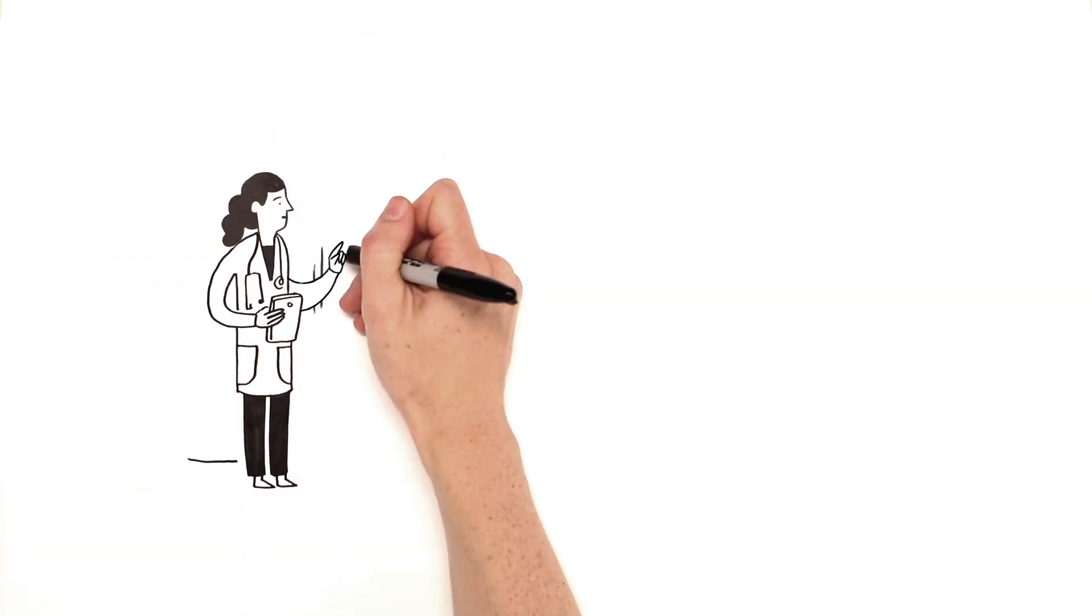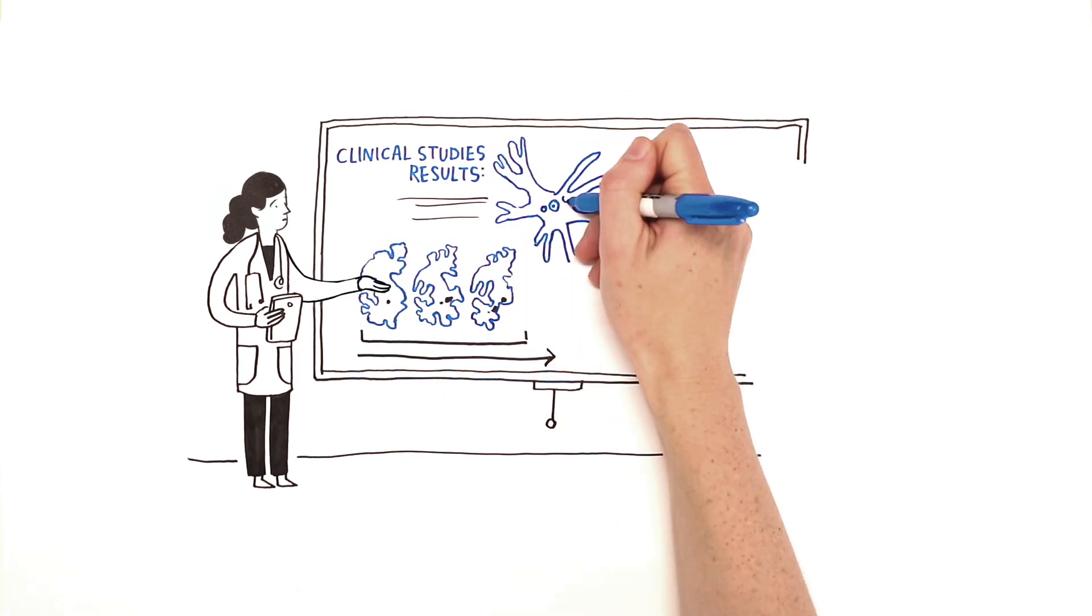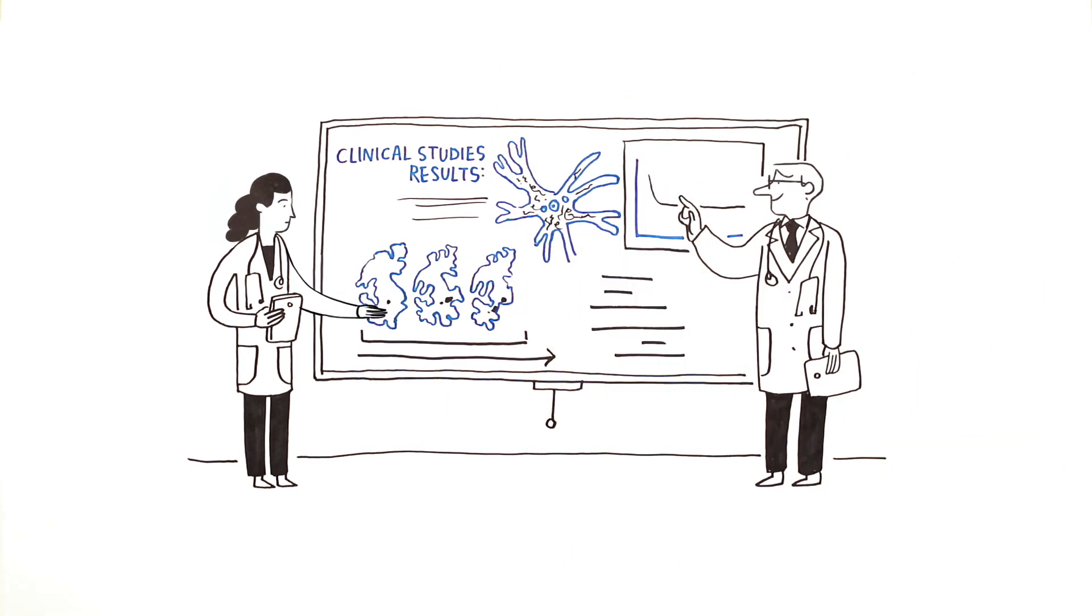Two major clinical studies recently conducted by TauRx using a tau targeting treatment have shown promising results in people with the early symptoms of Alzheimer's.